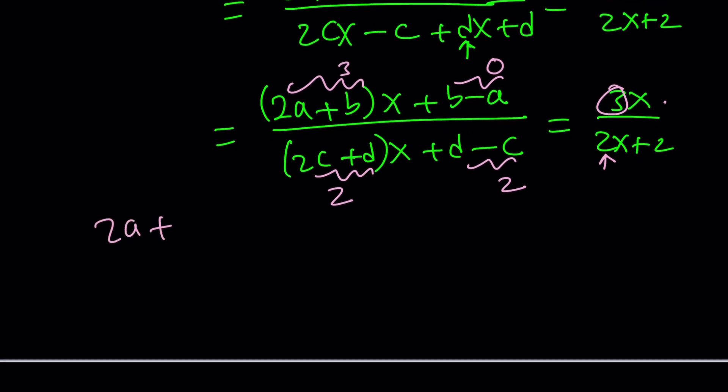For example, this one is 2a plus b is equal to 3 and a is equal to b. If you replace b with a, you get 3a equals 3, which is a equals b equals 1. So they're both 1.